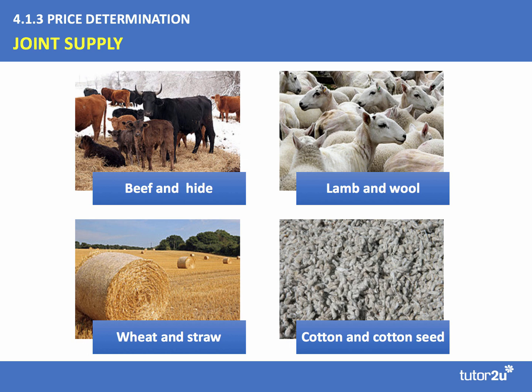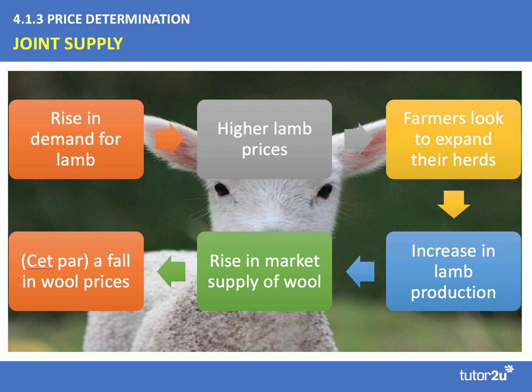Let's work through a quick example. Consider an increase in market demand for lamb — consumer preferences switch towards lamb, demand shifts out to the right. Other things being equal, that's going to lead to higher lamb prices. If the price of lamb goes up, sheep farmers will be looking to expand their herds, which over time will lead to an increase in lamb production. As lamb production grows, the market supply of wool — the byproduct — would increase.